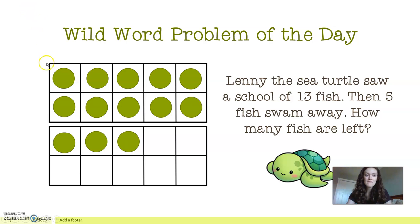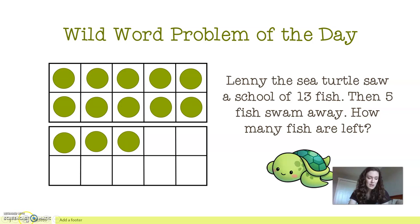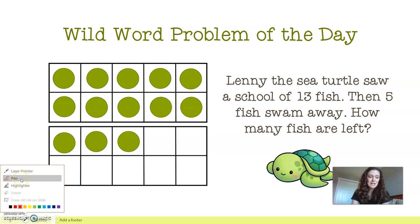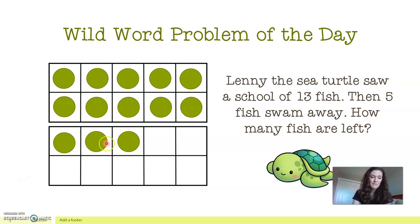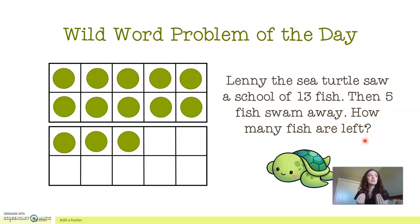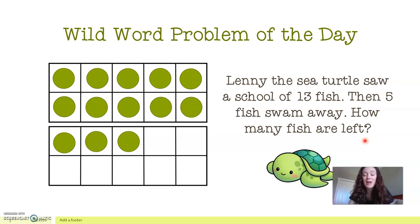So we have two 10 frames. We know that all of these frames are 20 because we know this is 10 and this is 10. So I counted out 13 and placed them within our grid here. We know that Lenny saw 13, which is why we start with 13. If we look at our language here, it says then five fish swam away. How many fish are left? So our keyword here is "left" — we're looking for how many are left after some went away. So that gives us a hint that this is subtraction.